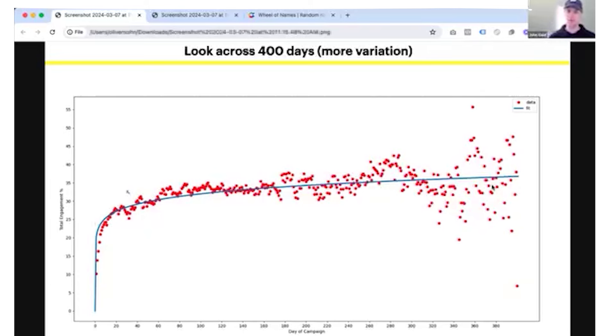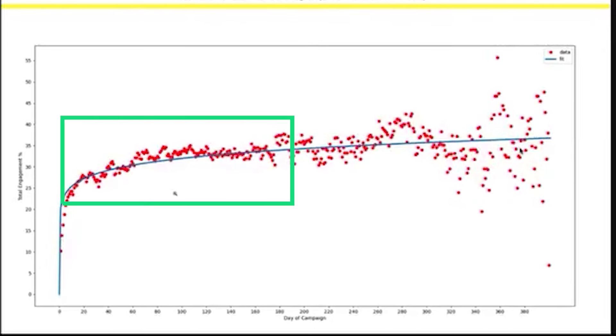Essentially what you're seeing here are 400 red dots. Every one of these dots represents one day in the life of a campaign and the average engagement rate that all the campaigns that were running at that point in time had.